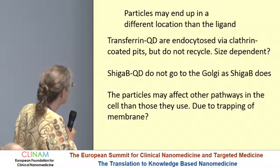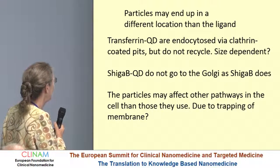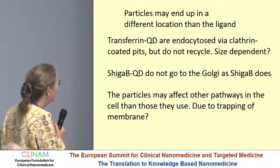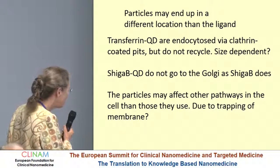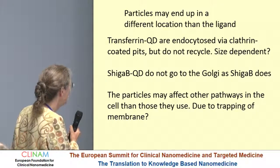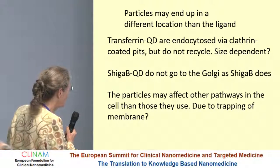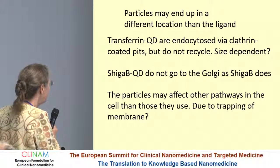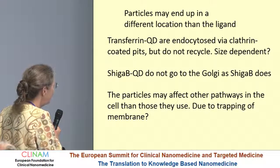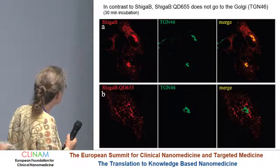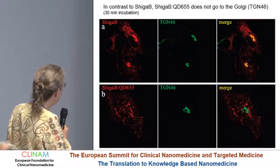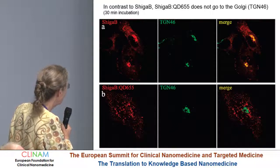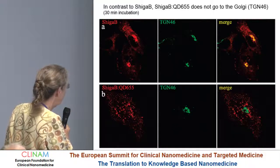Particles may end up in a different location than the ligand you add to the particle. For instance, transferrin Q-dots are endocytosed via clathrin-coated pits but they do not recycle — we don't know whether this is size-dependent. Shiga B Q-dots do not go to the Golgi as Shiga B does, so they end up in a different location. We have found that particles may affect other pathways in the cell than those they use themselves, whether that's due to trapping of membrane is still not known. Shiga B normally goes to the Golgi and becomes co-localized with the Golgi marker TGN46, but if you put it on a Q-dot, it never goes to the Golgi.